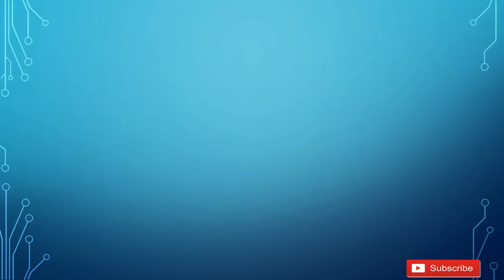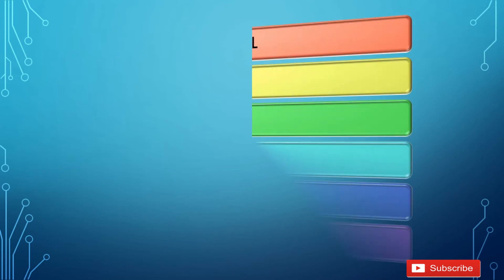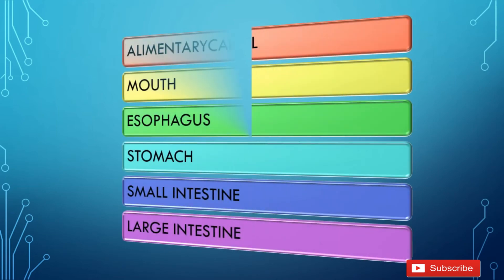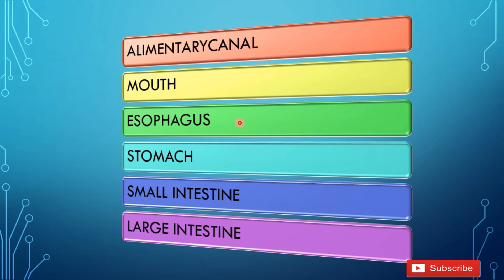As I told you, the alimentary canal has different parts: mouth, oesophagus, stomach, small intestine, and large intestine.